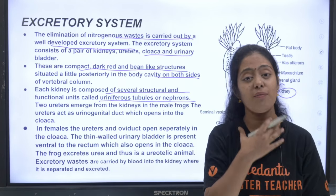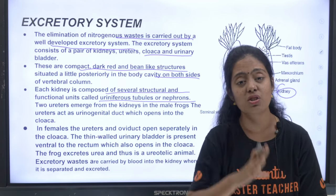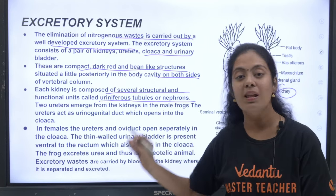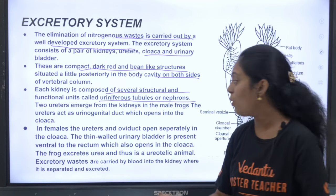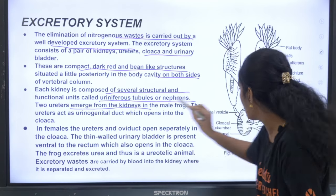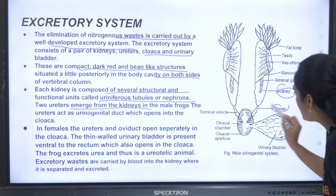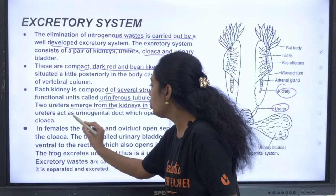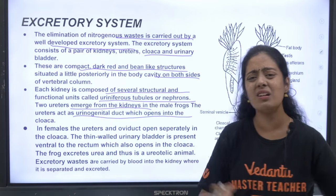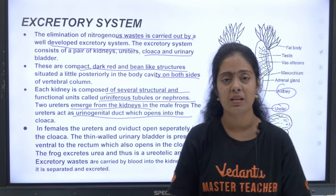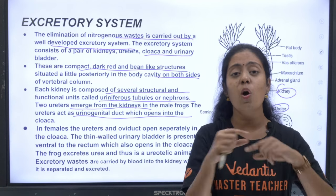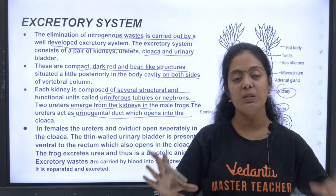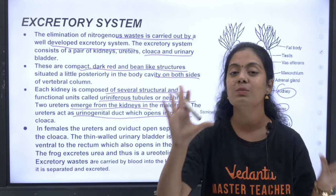Each kidney is composed of several functional units called uriniferous tubules or nephrons — nephrons are the structural and functional unit of the kidney. Two ureters emerge from the kidneys and act as the urinogenital duct, which is a common duct for both the reproductive and excretory systems.